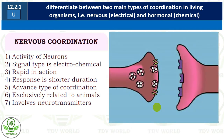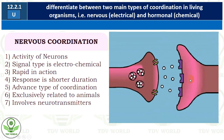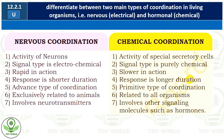So neurotransmitters are involved in nervous coordination, while chemical coordination involves other signaling molecules such as hormones. Hormones, as we discussed, are chemical substances that carry a message, and we will study them in detail in the upcoming SLOs.